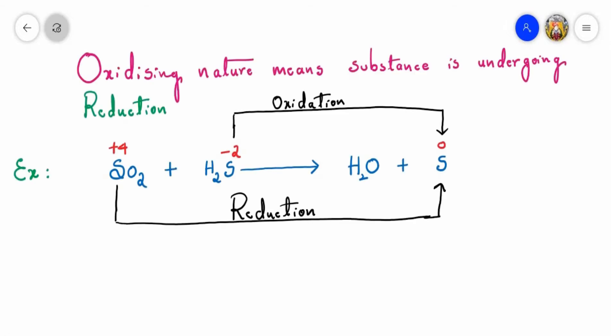Oxidizing nature means the substance is undergoing reduction — this point we have to remember. In the reaction SO2 plus H2S gives H2O plus sulfur, the reaction is not balanced. In SO2, oxygen appears two times, but on the product side H2O has oxygen only one time, so let me balance it by writing two here.